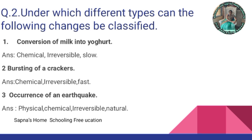Question 2: under which different types can the following changes be classified? Second: conversion of milk into yogurt. It is a chemical change because a new substance is formed. It is irreversible because it cannot be changed back. And it is a slow change.